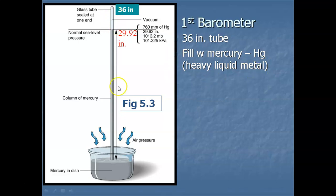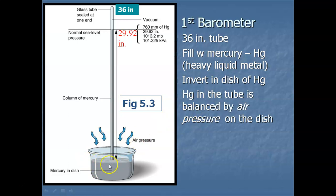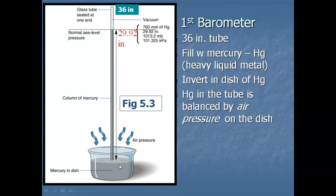We fill the tube completely and then invert it — tip that test tube filled with mercury into a dish of mercury. You would think all the fluid would wash out, but since we're tipping it over in a dish of mercury exposed to air pressure, the mercury in the tube ends up being counterbalanced by the air pressure on the dish. The weight of the atmosphere pressing down on the dish is able to keep the mercury in the tube at a height of 29.92 inches.